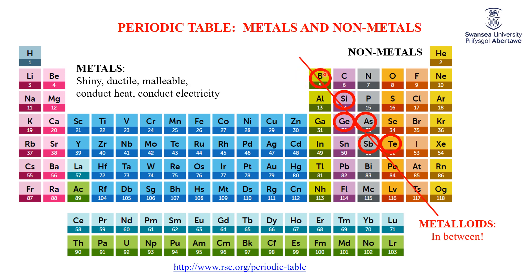I'm also seeing, very distressingly, a lot of people — including the textbook we use for the first year — claiming that boron is a non-metal. That is totally bogus. Boron is, in the University of Swansea chemistry department, a metalloid. And as already mentioned, hydrogen up there — weirdo stuck with the metals — is very, very distinctly and definitively a non-metal. There are some reports that when you make it so cold that it's a solid, one form of it can have some metallic properties, but that's just getting weird. We are going to always call it a non-metal.